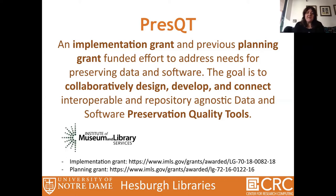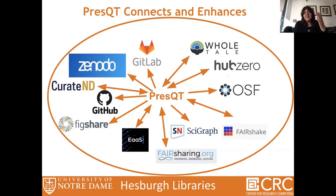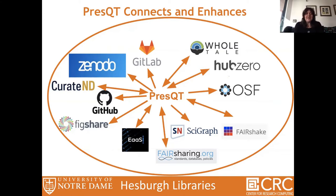You can find the implementation grant and the planning grant at the URLs here. We are in the third year of the implementation, and we are connecting to all these different systems. The idea behind PresQT is not to be a new user interface — a new environment researchers have to work with. The philosophy is we connect to existing solutions they want to use, like GitLab, GitHub, Figshare, Curate ND, Zenodo, and science gateways like HUBzero and OSF.